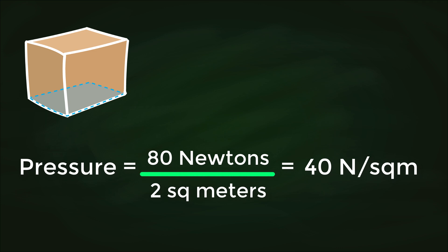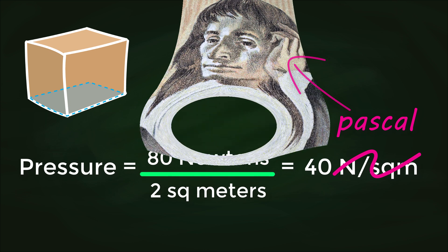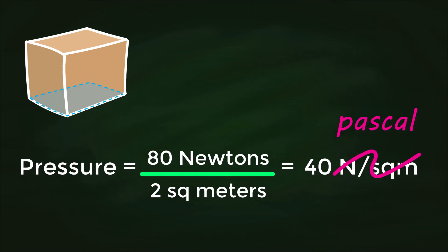Something we didn't cover in our last video is that the unit for pressure is pascal, named after French mathematician Blaise Pascal. One newton per square meter equals one pascal. So the pressure exerted by the box on the table is 40 pascals.